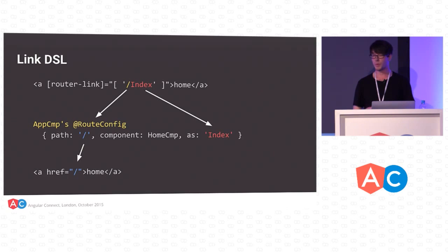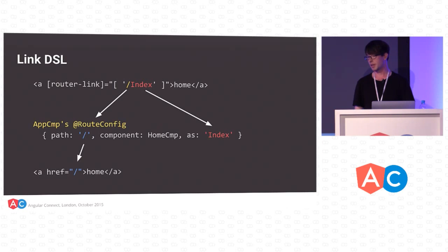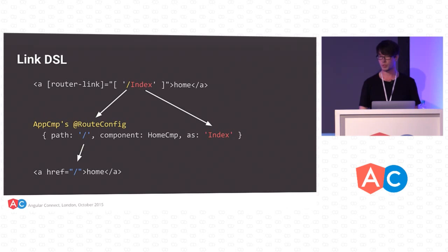Let's see how we would construct and render an actual link. We start with this router-link directive, and we're going to look up on the application component's route configuration because this is an absolute route. We're going to look for a route called Index. Because Index has a path that's just a static string slash, we'll put that in as the href and render it. We also set up listeners so instead of refreshing the page, we prevent the click and change the components around and update the URL with history push state.